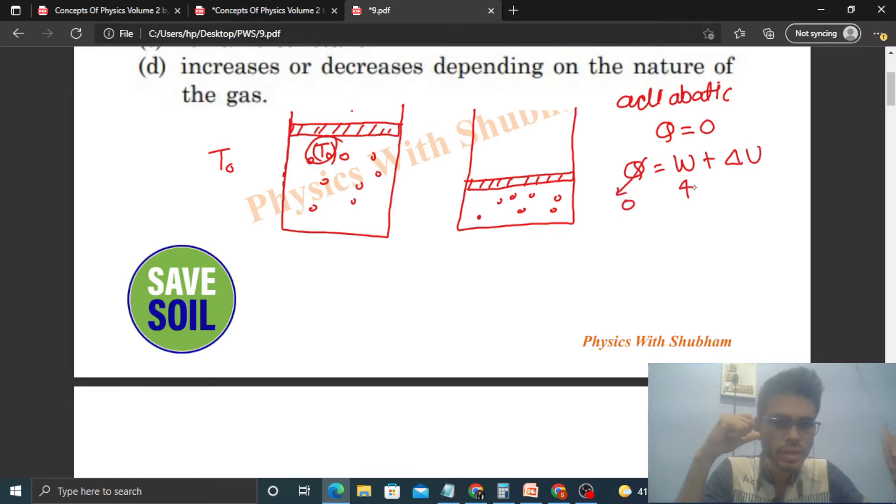Now what is work done by the gas? So work done by the gas will be negative because the gas is compressed here, right? When gas is compressed its volume decreases, then the work by the gas will be negative. You can see dW = P·dV.